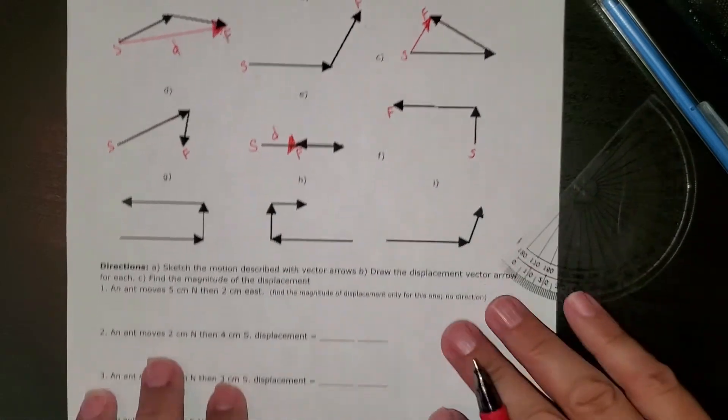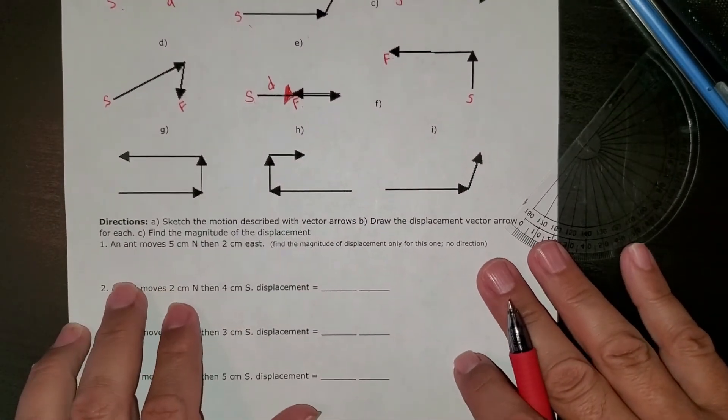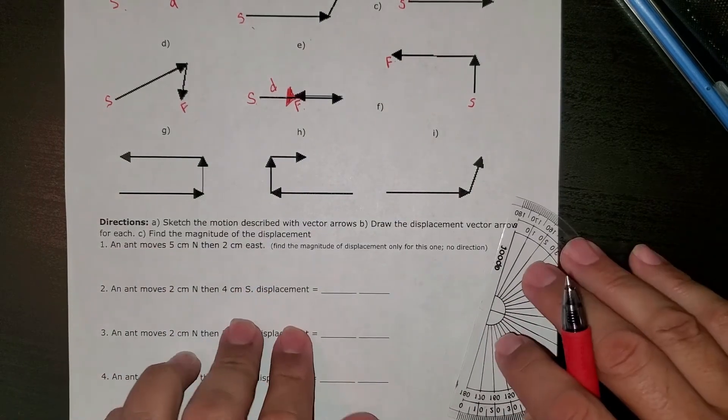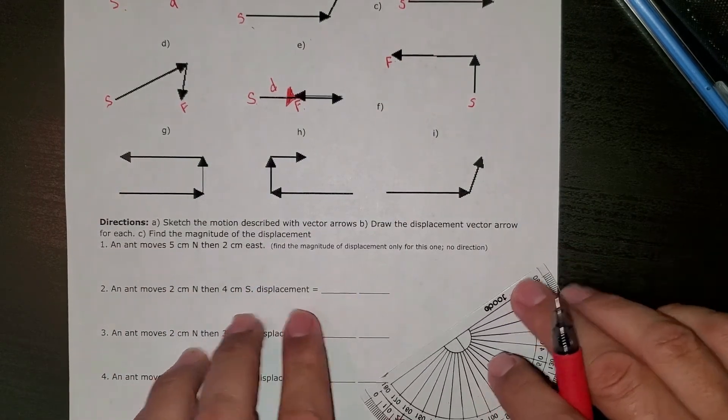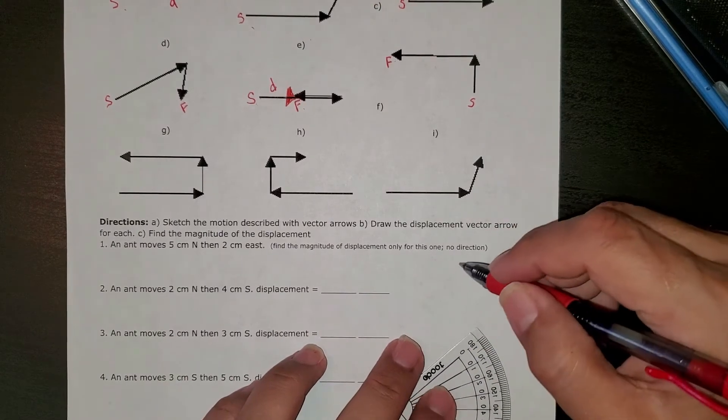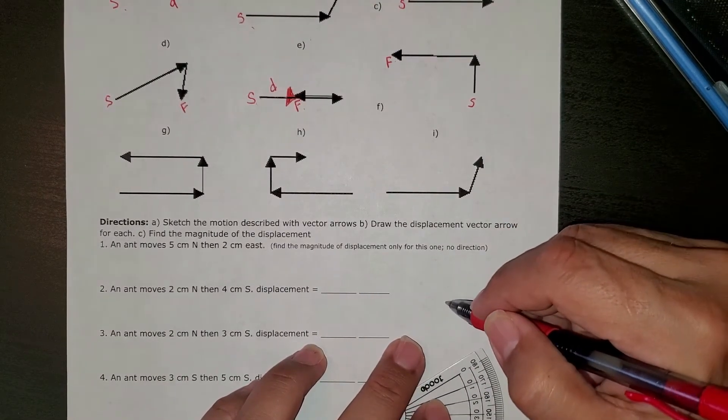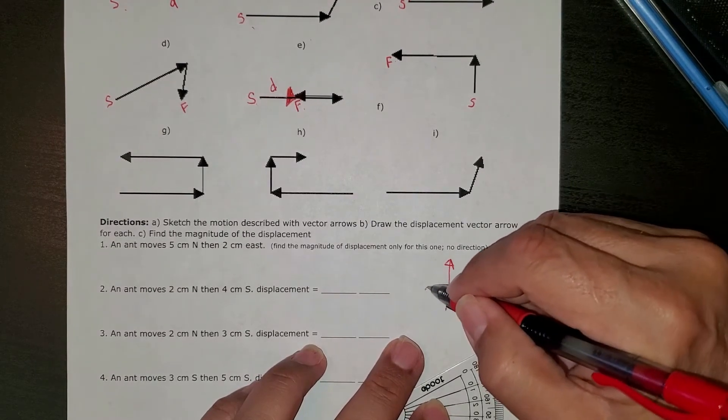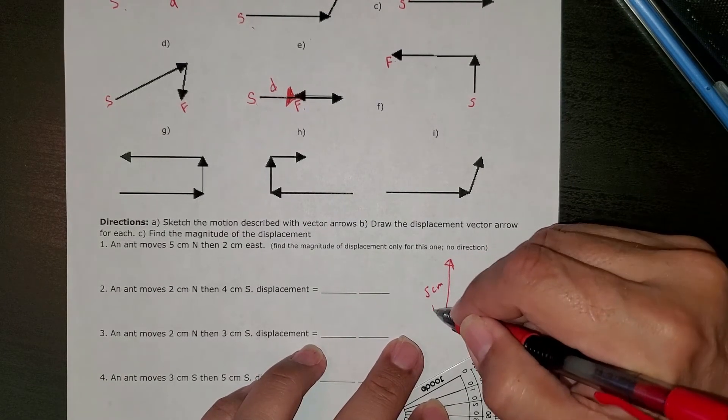This one over here, you'll have to draw your own pictures. That moves five centimeters north—that means up—and two centimeters east. You have to do the displacement. You've got to get yourself a ruler. I'm going to do it without it. Five centimeters north, then I'll label it five centimeters north.